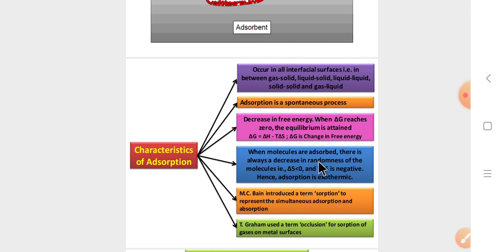But next, when the molecules are absorbed, there is always a decrease in randomness of the molecules. Randomness or orderless of the molecules means entropy. Change in entropy also decreases. Delta S means we can decrease. Then delta G value is equal to negative. Then the adsorption reaction is always an exothermic reaction.